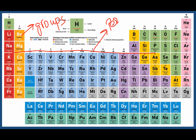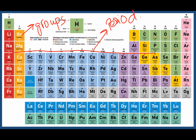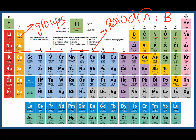There are seven periods in the periodic table. The first three periods are called short periods because they have 2, 8, and 8 elements respectively. Periods 4, 5, 6, and 7 are long periods with 18 and 32 elements. There are two main groups: Group A, called the normal or representative group, and Group B, called the transition elements group.